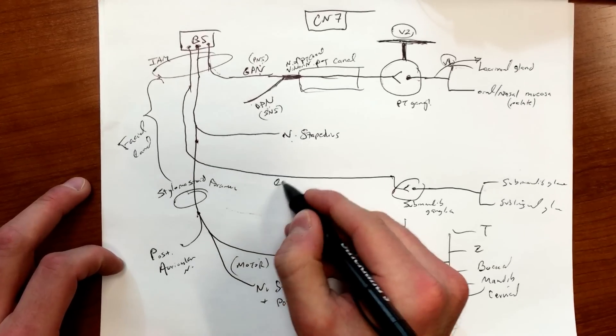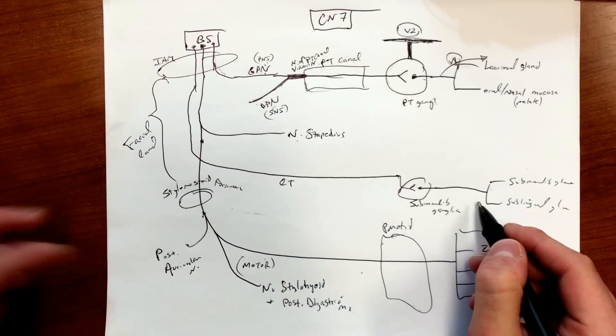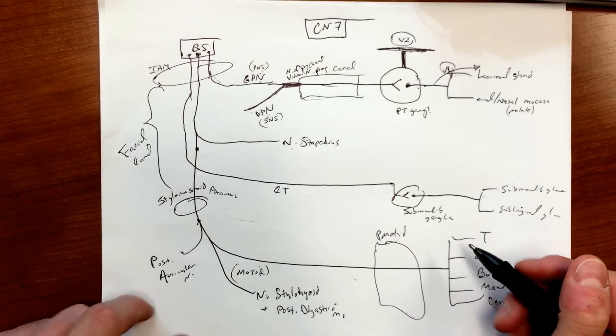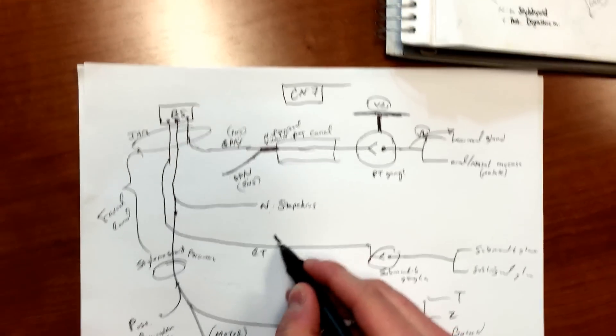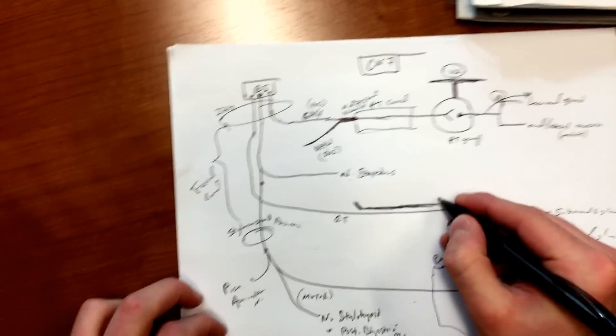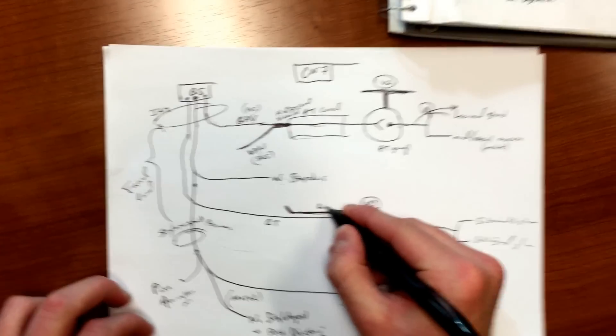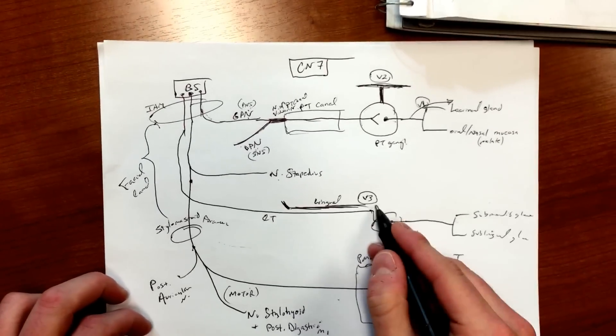These sensory fibers of chorda tympani - they need to get there, and there's already something heading that way, and that's lingual nerve. So lingual nerve is a branch off of V3 that we said earlier, and it's already heading there. Obviously lingual - tongue, right?